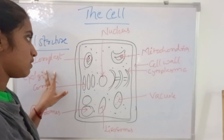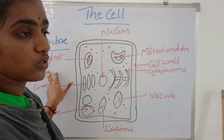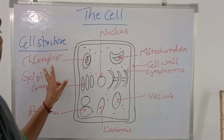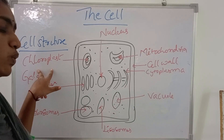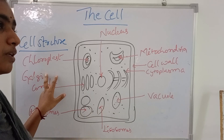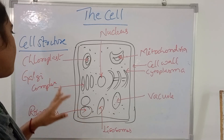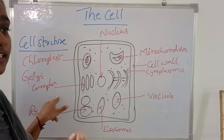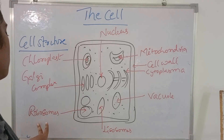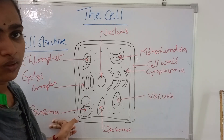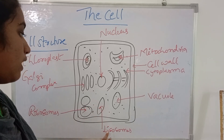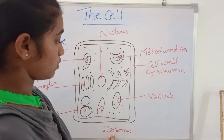Next is chloroplast, which carries out photosynthesis activity. Chloroplast is present in plant cells and absent in animal cells. Next is the Golgi complex, which processes enzymes, fats, hormones, and vitamins. Ribosomes are also known as protein factories. Lysosomes are called suicidal bags.